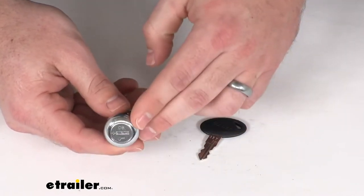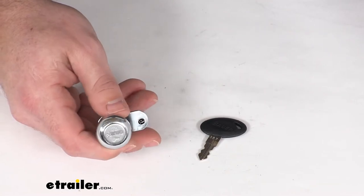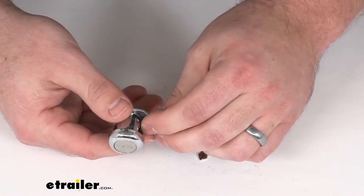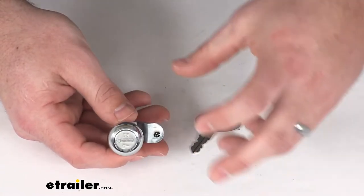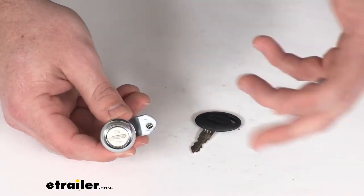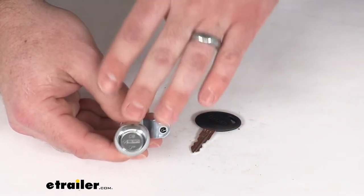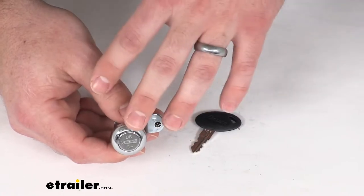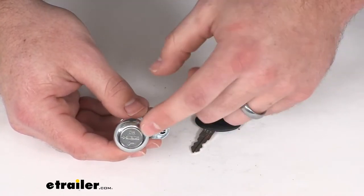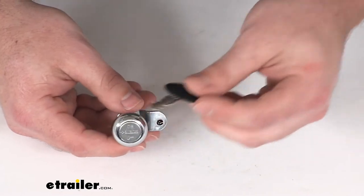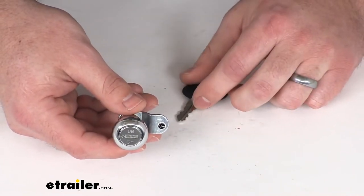This can be keyed alike with any of the other Bauer products RV locks as long as they are ordered within the same order. So if you are switching out multiple compartment door locks, you can get them all keyed alike so you don't have to worry about which key goes to which lock. One key will open them all.